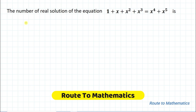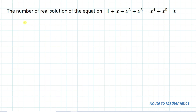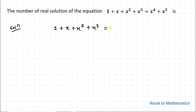Hello everyone, welcome to Root 2 Mathematics. In this video we are going to solve an interesting algebraic question. The given question is: find the number of real solutions of the equation 1 + x + x² + x³ = x⁴ + x⁵.